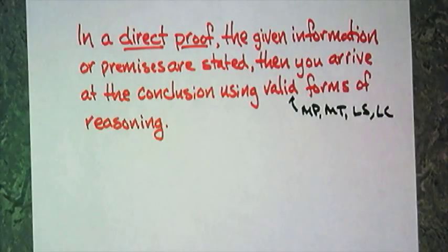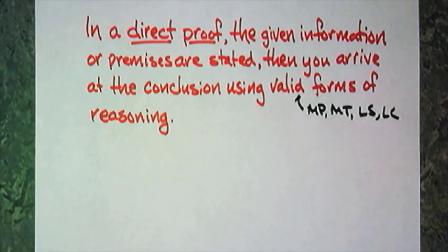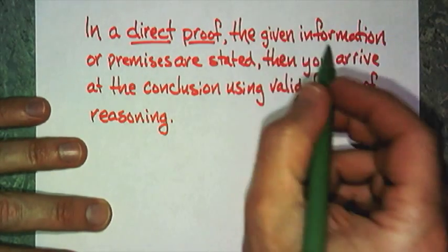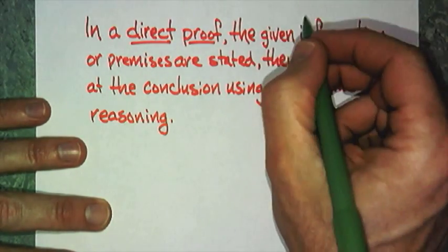The given information - those are your things. I like to think of this like cooking. The given information, those are your ingredients.